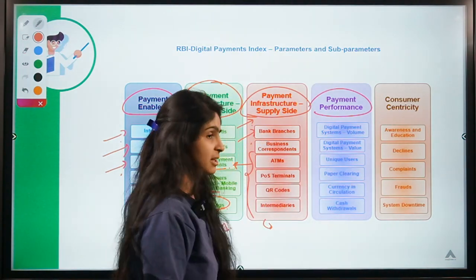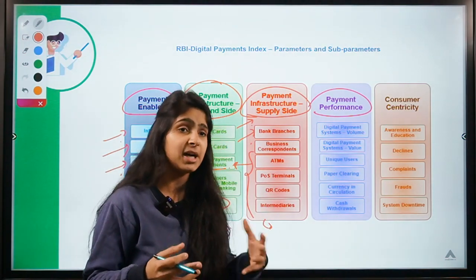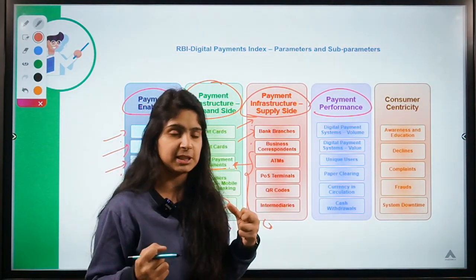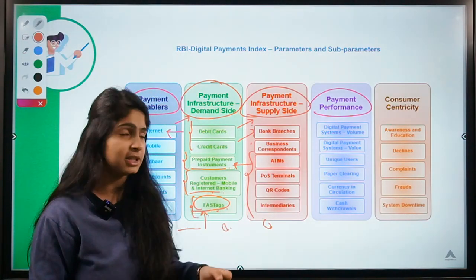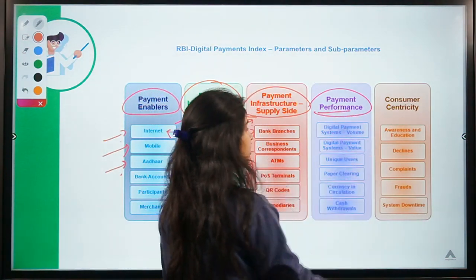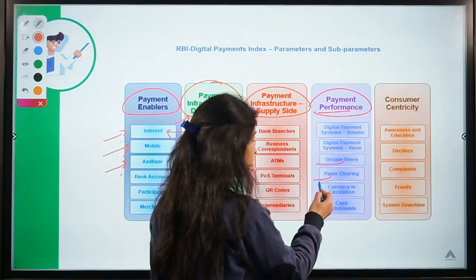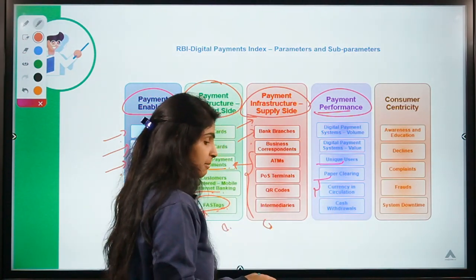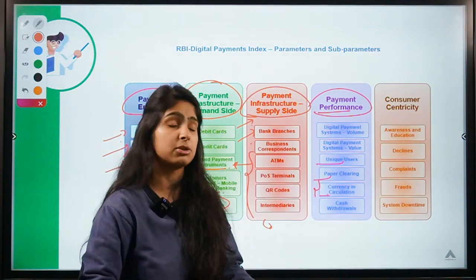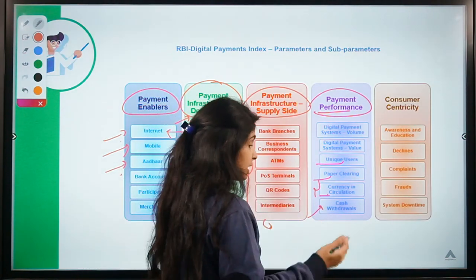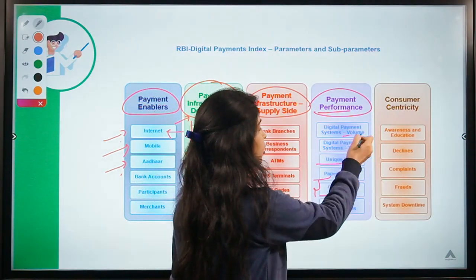Now, payment performance. Basically whether these payments which are being performed are taking time or not taking time, or whether there is some problem in their operation. So here we are talking about performance: unique users, paper clearing, how much currency is in circulation. Because if digital payments rise that obviously reduces the cash being circulated. How many people are withdrawing cash or whether they want to use digital modes for their payments — the volume and the value.